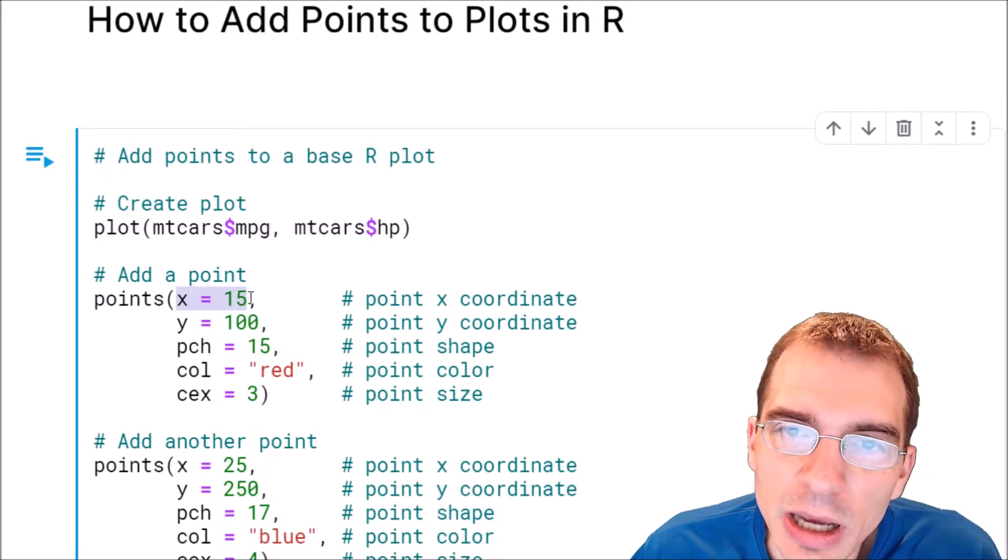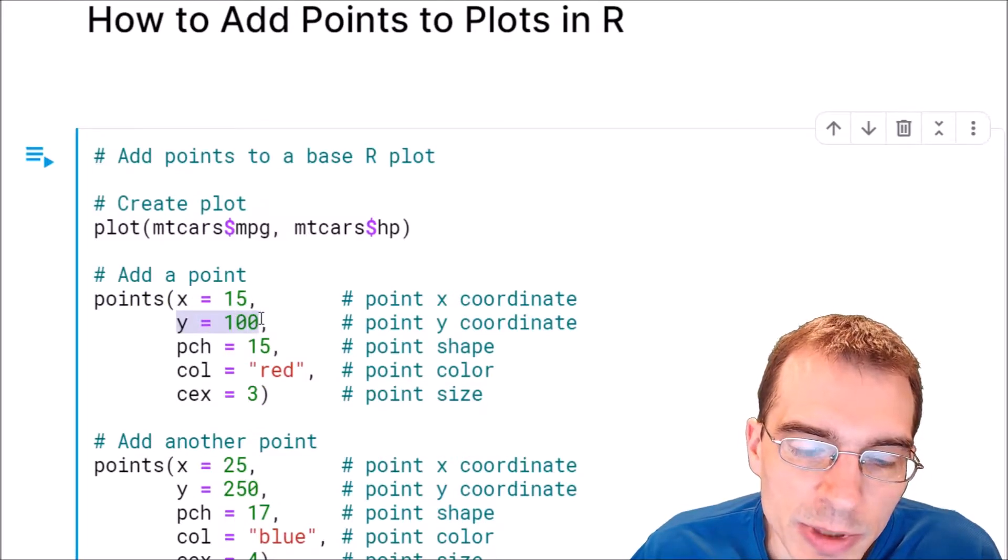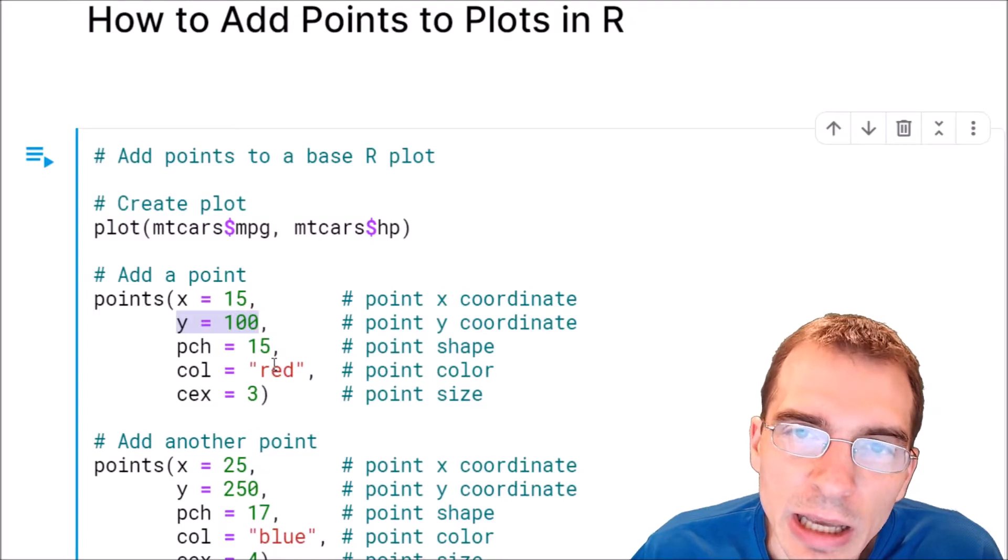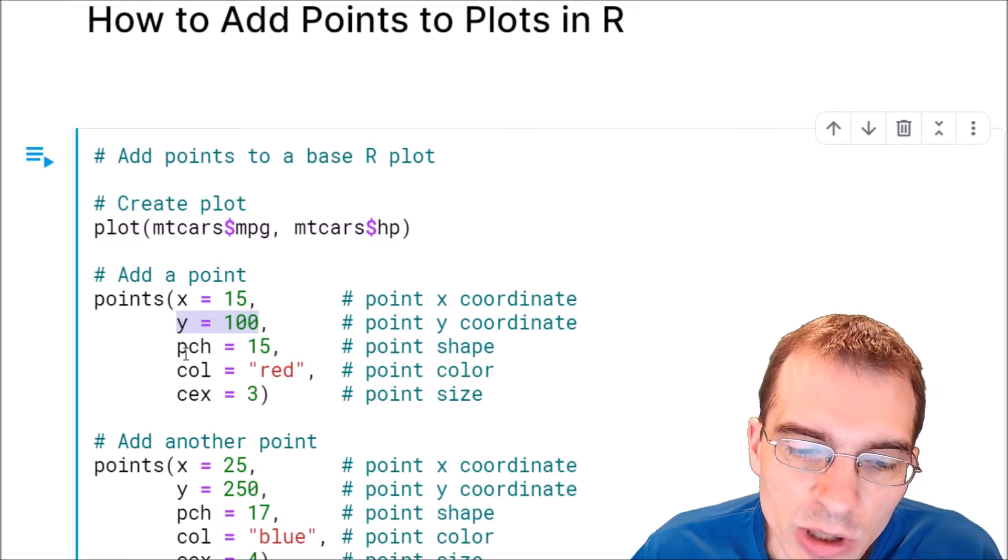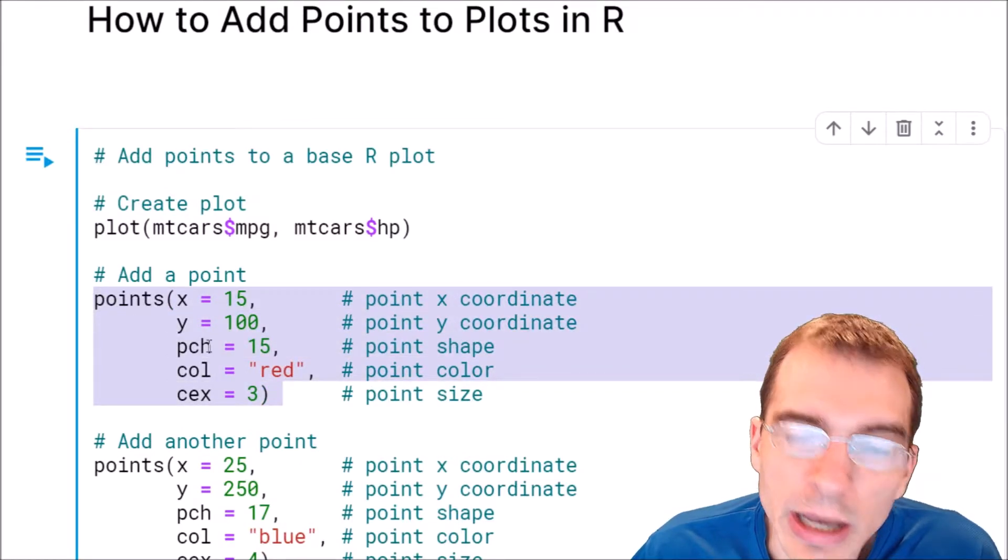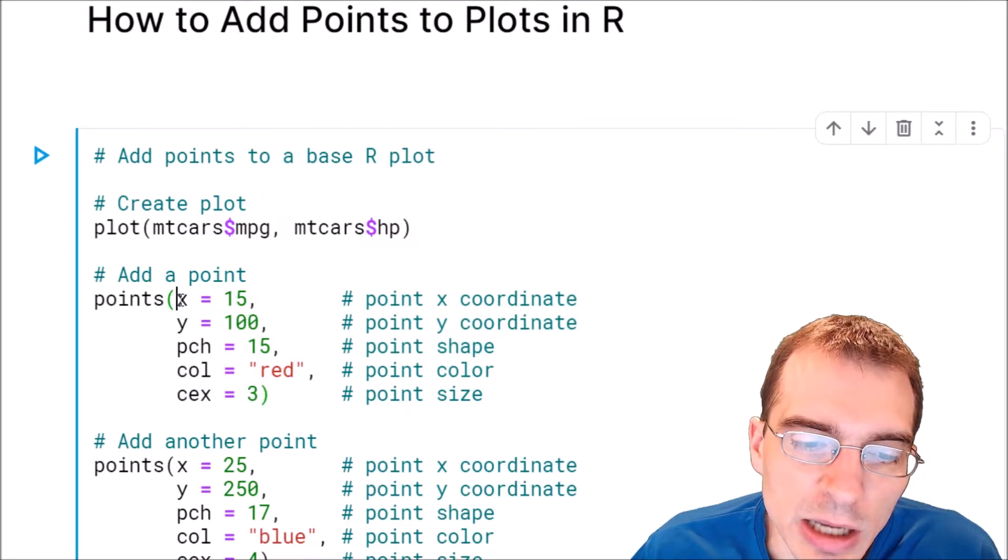X is going to be the X coordinate. Y argument is the Y coordinate. And then you can add some extra arguments for other things if you want to. We're going to add a shape, color, and size to our point. So this whole call will add one point at the spot X equals 15, Y equals 100.